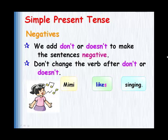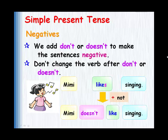For example, Mimi likes singing. In order to do the negative, we would say Mimi doesn't like singing. We place doesn't before the main verb, and we're using doesn't because the subject is Mimi — we could replace Mimi with she.